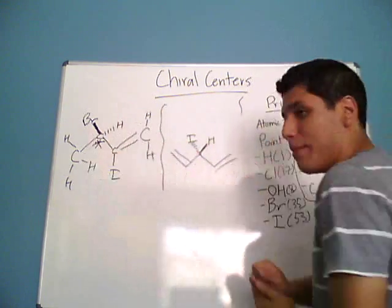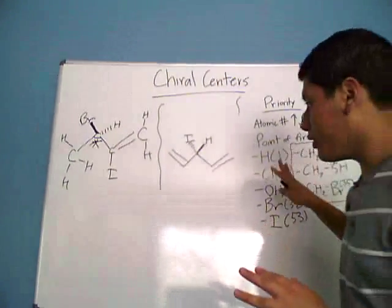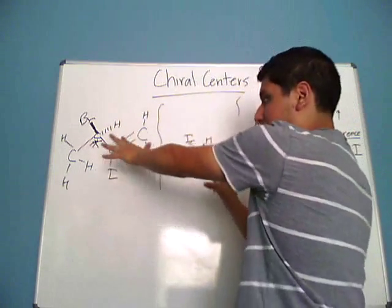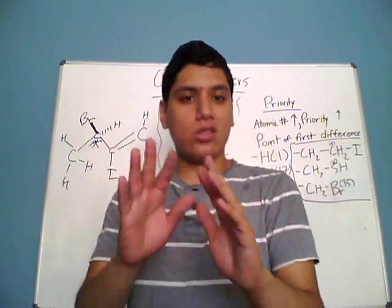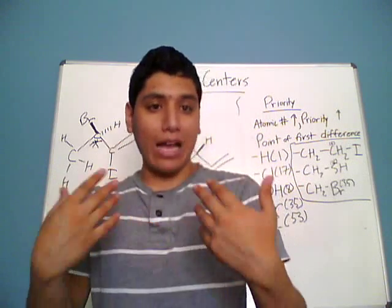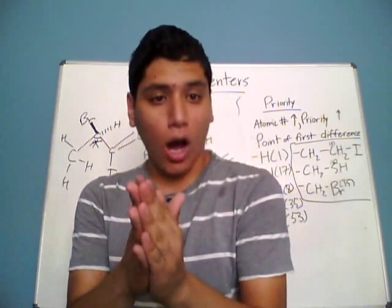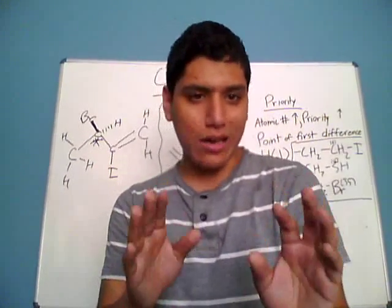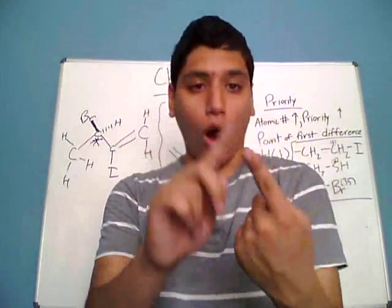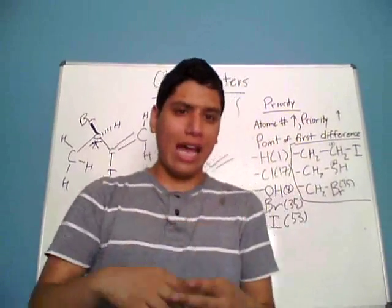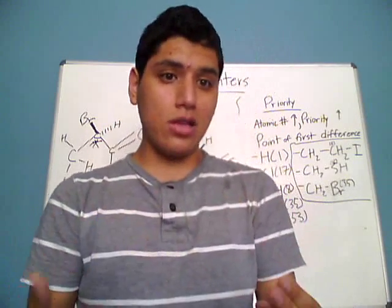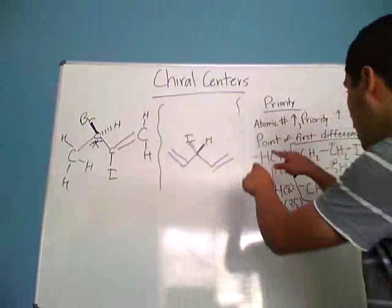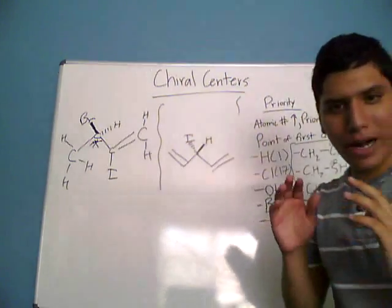Now that we've covered these two examples, I'm going to go over something called the priority rules. When you're naming longer and more complex compounds that also have chiral centers, each chiral center must also be given a specific name — either R or S. To determine whether a chiral center is R or S, you use the priority rules. The first and highly important rule is: as the atomic number increases, priority increases.